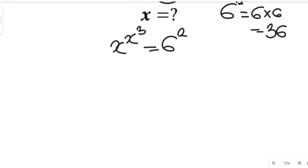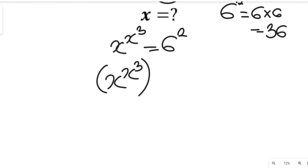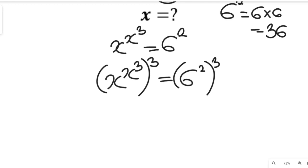The next thing is to simplify further. We want to take the cube of both sides. As we progress you're going to see the reason why we do that. If we take the cube of both sides, we will have 6 to the power of 2, all in brackets, cubed.